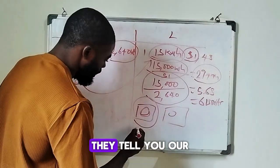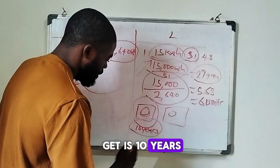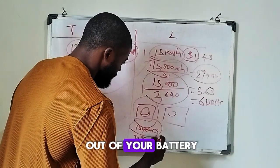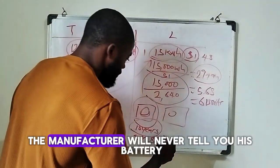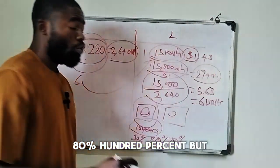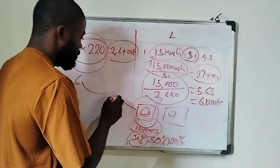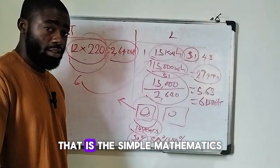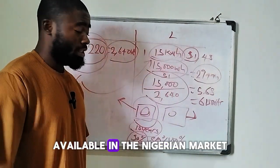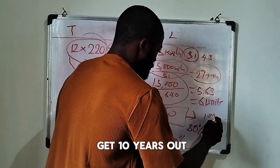A tubular battery manufacturer will tell you their battery has a 10-year lifespan, but to get those 10 years you need to maintain 50% DoD. The manufacturer is not saying you cannot draw 80% or 100% from your battery — the battery can deliver 50%, 80%, or 100% — but the consequence is reduced lifespan. That is why most manufacturers recommend 50% DoD on tubular batteries to achieve 10 years.